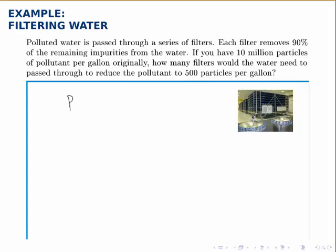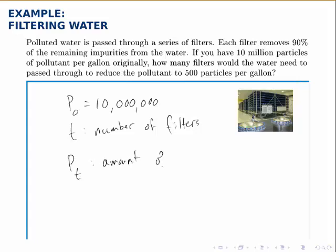In other words, our initial population, quote unquote, is the 10 million particles per gallon. T is the number of filters that this water has passed through, and then P_T is the amount of pollutant left after passing through that many filters.